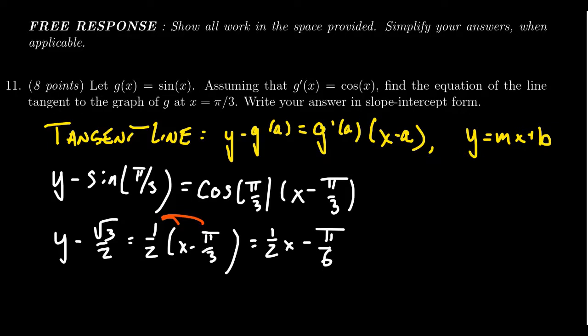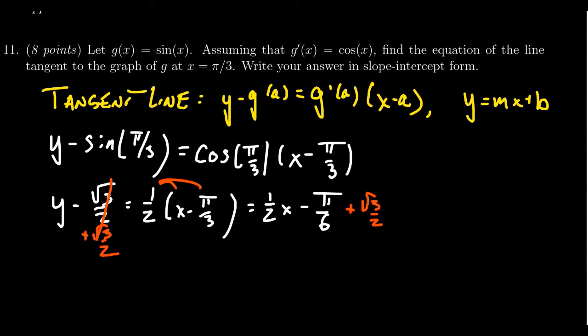And then we're going to add the root 3 over 2 to both sides of the equation. So it cancels here, and then we have to add it over here. As these are two irrational numbers, leave it in exact form. Don't write it as a numerical approximation. Just leave it exact.